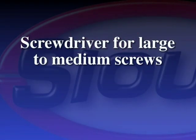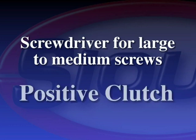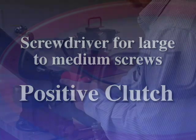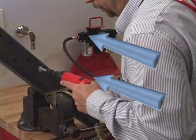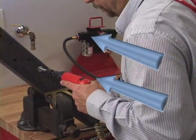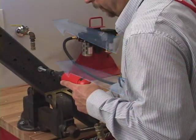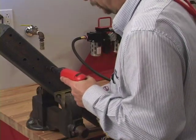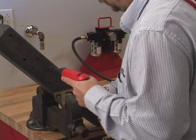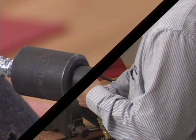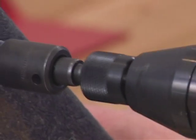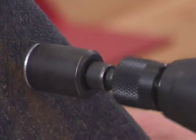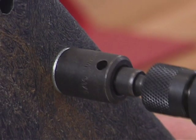When a screwdriver is used for driving large to medium screws, the positive clutch's output is determined by the amount of force the operator exerts on the tool to keep the jaws engaged. When the motor torque is reached, the clutch jaws cam out of engagement and start to slip. Torque can be built up in the fastener if the operator allows the slipping action to continue.